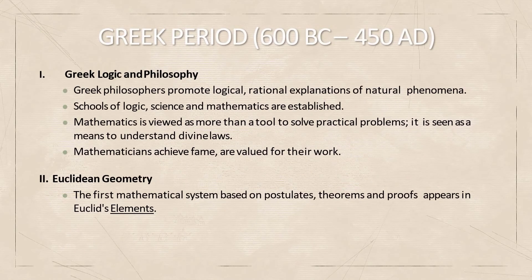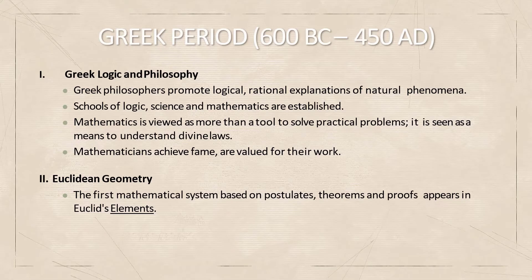The Greek period spans from 600 BC to 450 AD. In this period, they put an emphasis on logic and philosophy. Greek philosophers promoted logical and rational explanations of natural events. Schools of science, logic, and mathematics were developed.